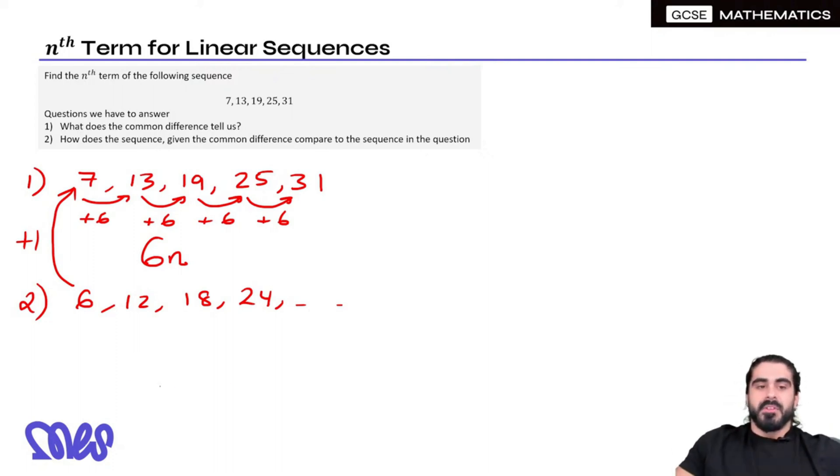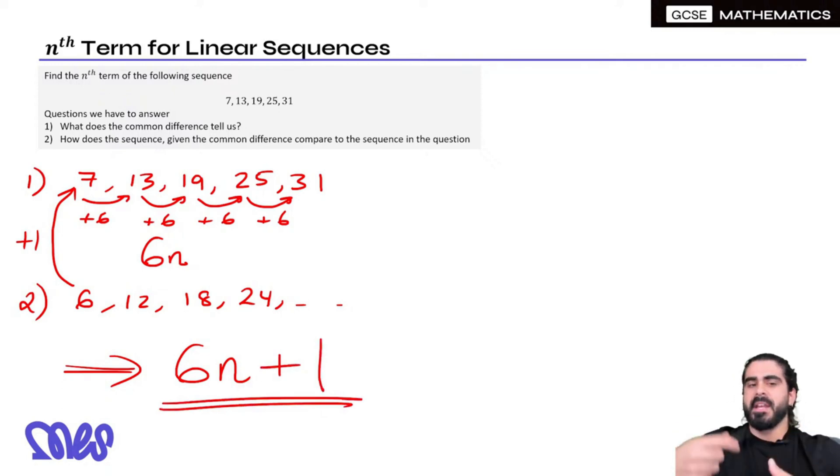So the sequence in question is one more than the 6 times tables. So that means, if the 6 times tables are 6N, we want one more than the 6 times tables. And then you can sub in N is 1, N is 2, N is 3, and you'll see it gives you 7, 13, 19, 25. So the very easy way to find what the N term is of a linear sequence, is you first write down what it's going up in, that's the coefficient of N, then you just work out the difference, that's all.